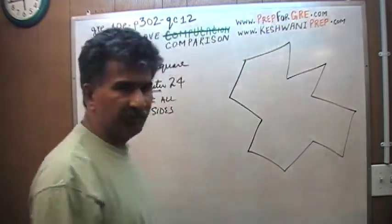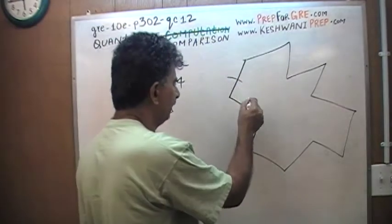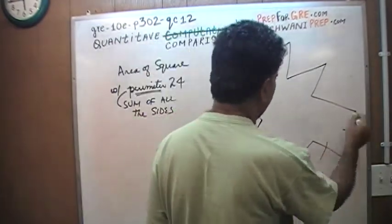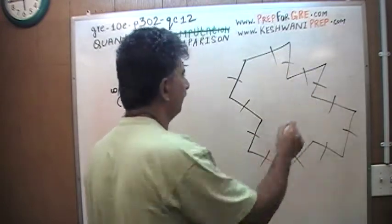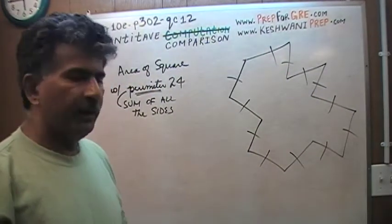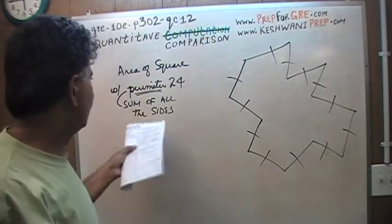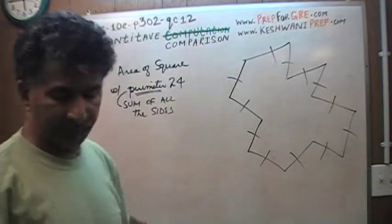The perimeter of this picture would be the sum of all the sides - 1, 2, 3, 4, 5, 6, 7, 9, 10, 11, 12. A dozen sides. So if you add up all these 12 sides, the sum will be referred to as the perimeter of this thing.